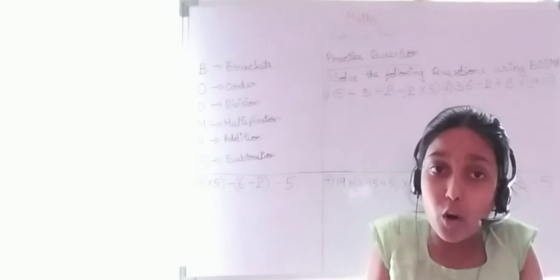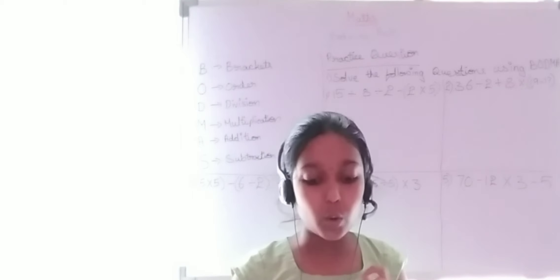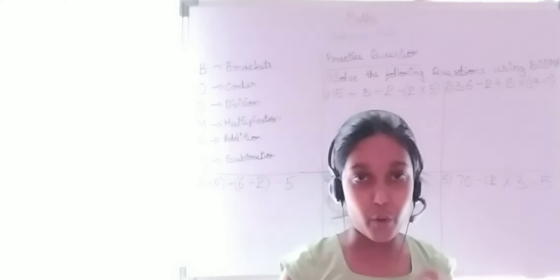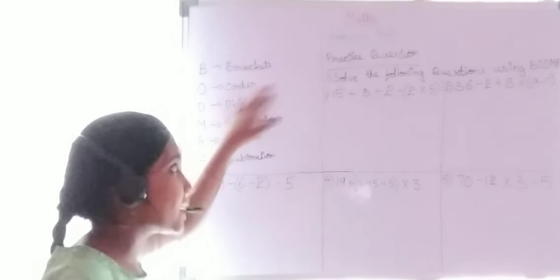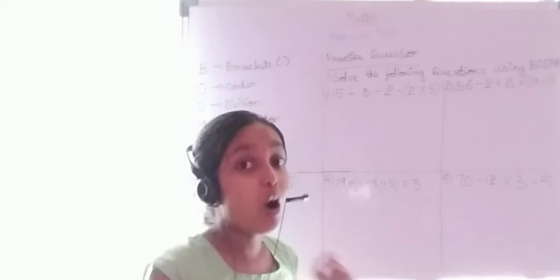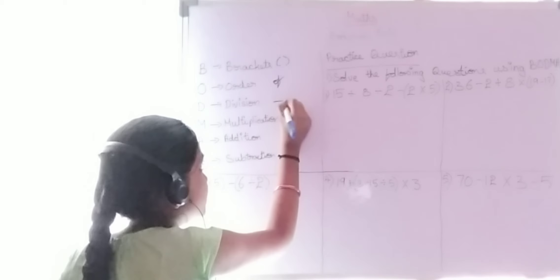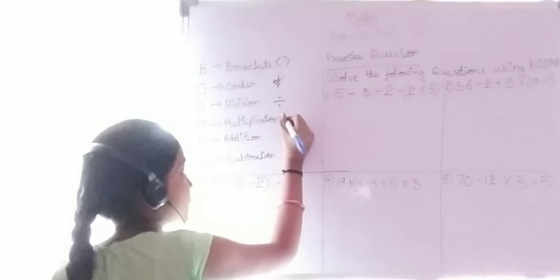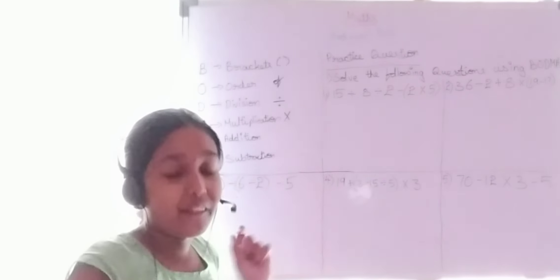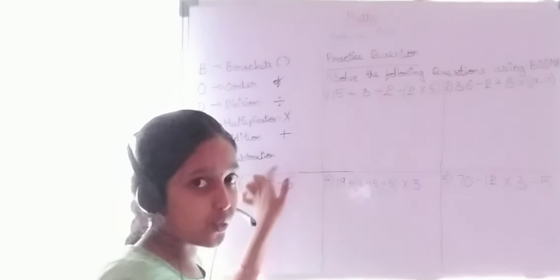BODMAS stands for: B for Brackets, O for Order, D for Division, M for Multiplication, A for Addition with the plus sign, and S for Subtraction with the minus sign.